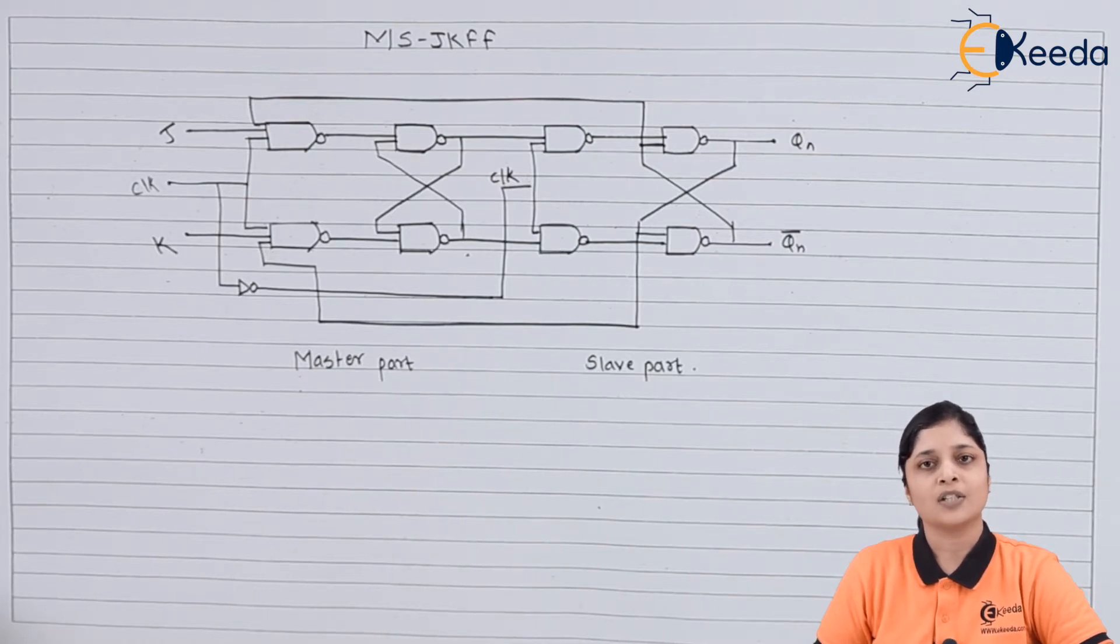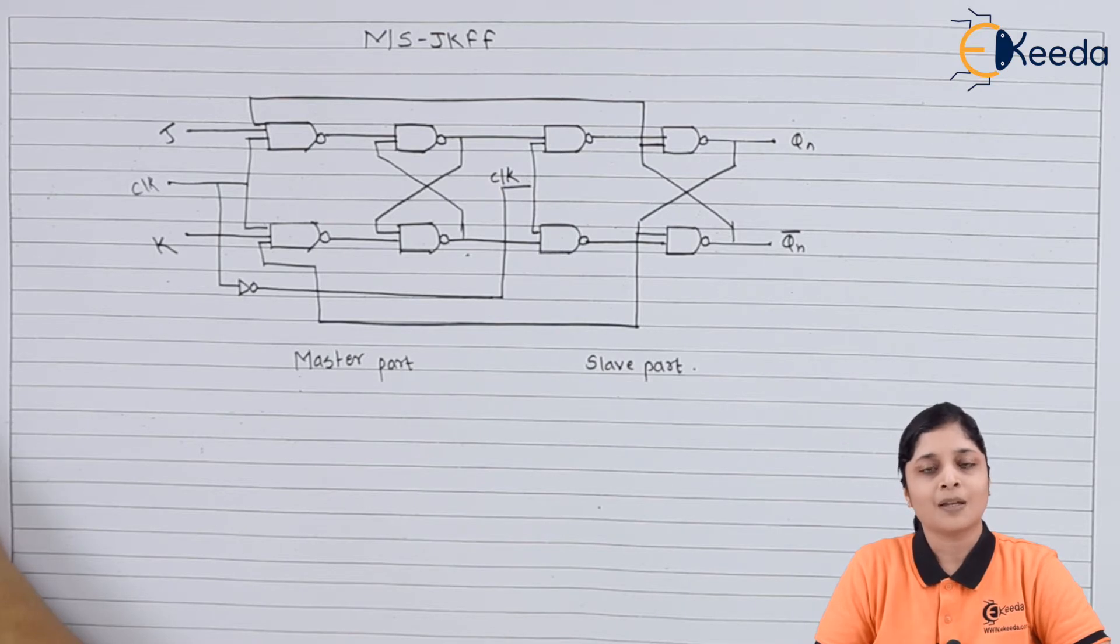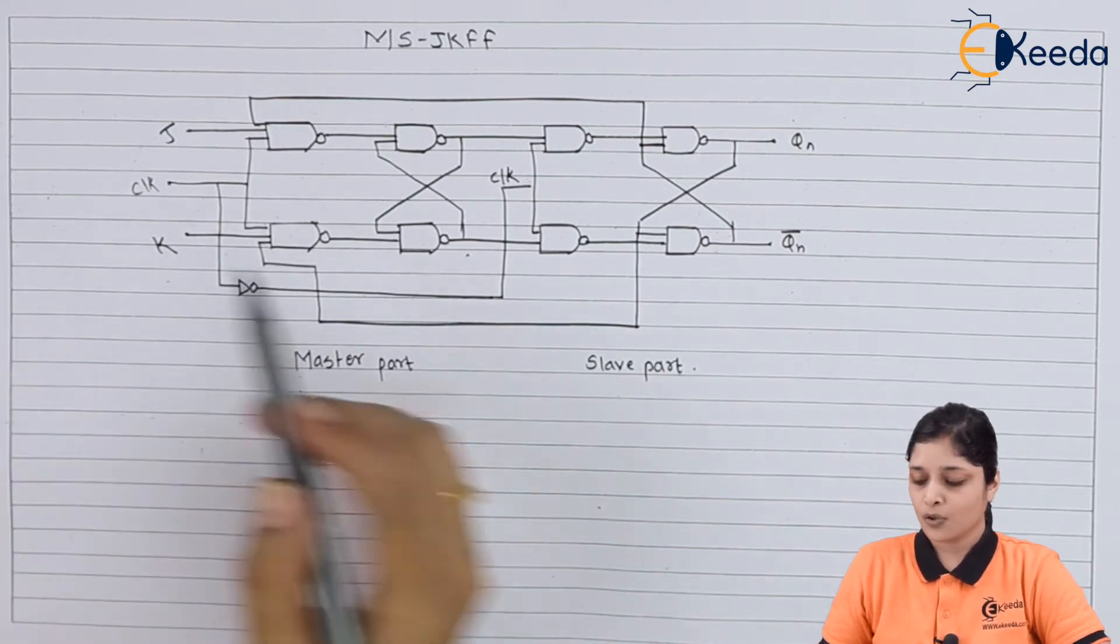Now the race around condition occurred in JK flip-flop. What is race around condition? When J equals 1, K equals 1, we get Qn bar, that is complement of memory, but this cycle continues further, it will not stop. This condition is called the race around condition.